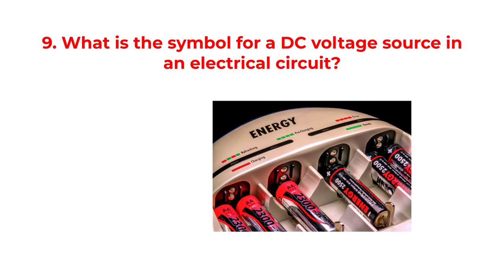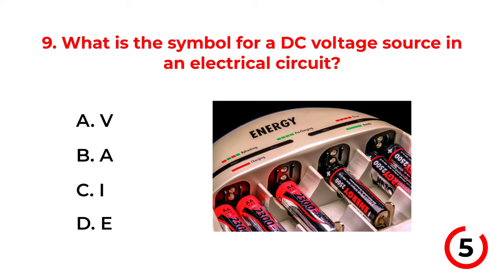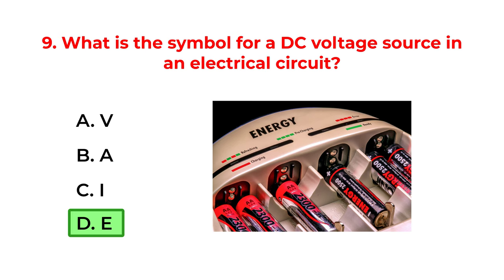What is the symbol for a DC voltage source in an electrical circuit? A. V. B. A. C. I. D. A. The correct answer is option D: E.